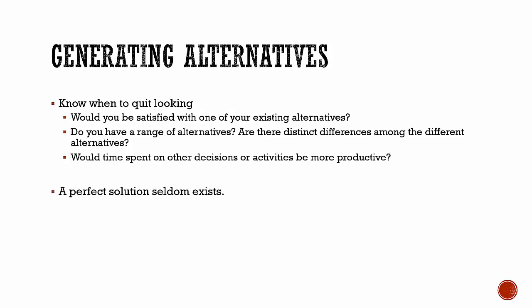Finally, you need to know when to quit looking. At some point you have to stop looking at alternatives and make a decision. Ask yourself: would you be satisfied with one of your existing alternatives? If so, maybe that's a good time to stop looking. Do you have a range of alternatives with distinct differences among them? If you have three alternatives that are all pretty much the same — like three new cars where the only difference is color — maybe look a little longer. Would time spent on other decisions be more productive? If so, maybe it's time to move on and make the decision. It's important to mention that a perfect solution seldom exists, so spending more and more time trying to find one is somewhat wasteful.